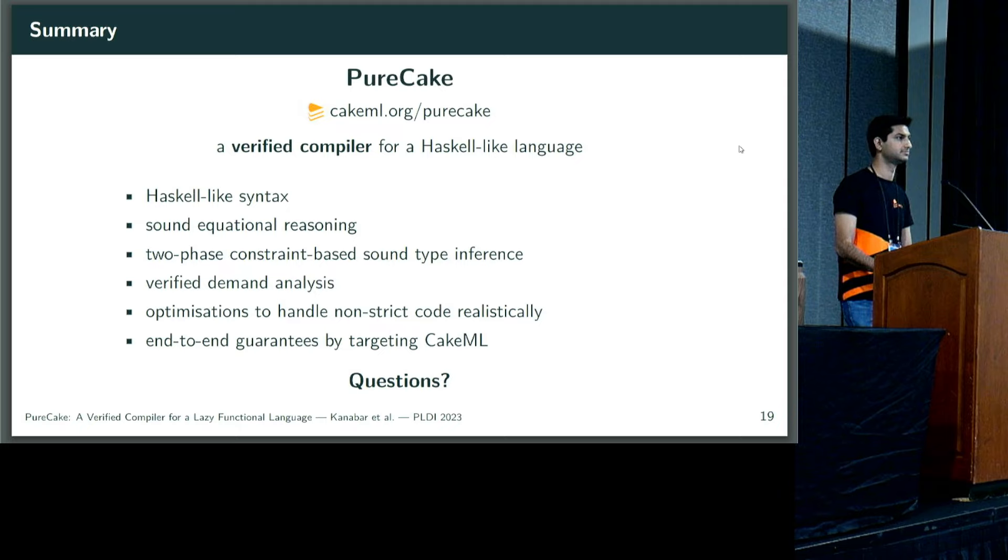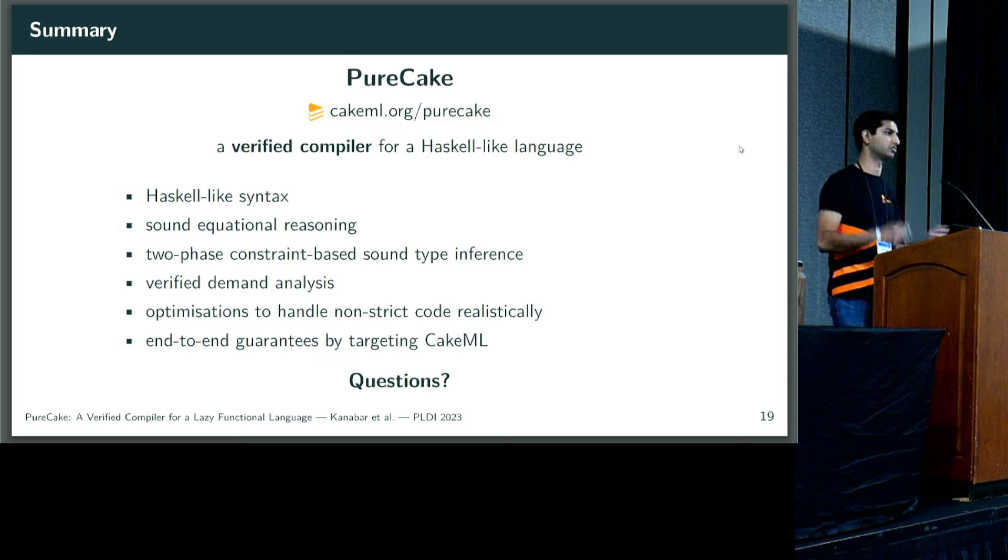Are you assuming that you're compiling whole programs, that you never link with anything after compilation? Yes, we are assuming whole program compilation. Because you mentioned FFIs somewhere in the middle of the talk, so that's why I was wondering. The FFI is inherited from CakeML. It's how CakeML programs interact, just generally with the outside environment. We have a C FFI wrapper, which is sort of in the trusted compute base. But it's not general language interoperability.